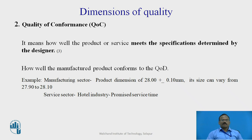The second dimension is Quality of Conformance. It means how well the product or service meets the specifications determined by the designer. Quality of conformance is essentially quality of manufacturing — how you manufacture a product that satisfies the design and the needs of the customer. For example, in manufacturing, if a product dimension is 28 ± 0.10 mm, its size can vary from 27.90 to 28.10; achieving these dimensions is quality of conformance. In the service sector — hotel industry — if the promised service time is 20 minutes and service is delivered within 20 minutes, that is good quality of conformance.